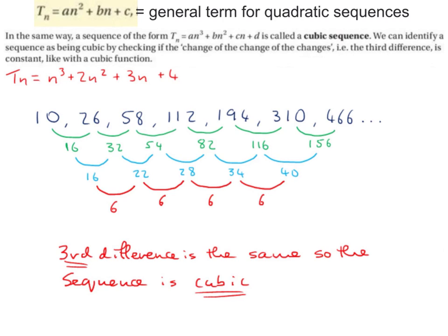So as we saw in previous videos, Tn equals An squared plus Bn plus C is known as the general term or the general rule for quadratic sequences.